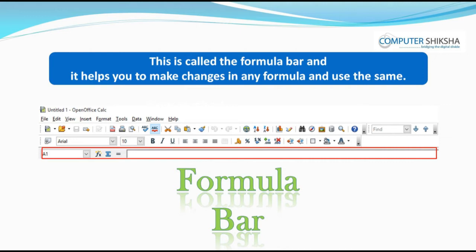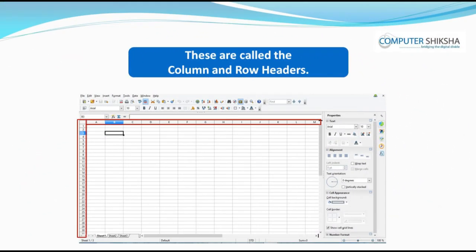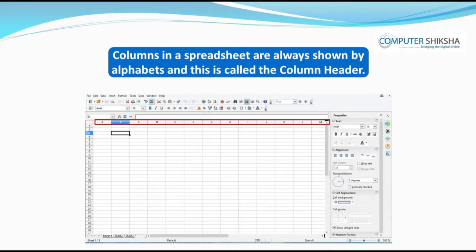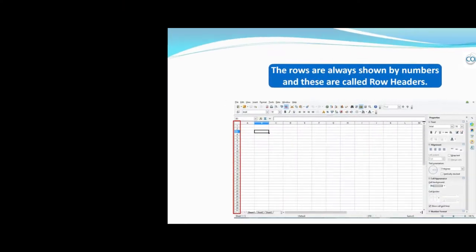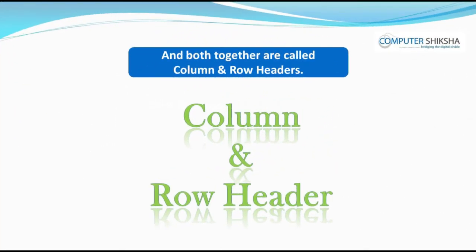That is called the formula bar, and it helps you make changes in any formula and use it. You will learn more about these formulas later. Look at the next picture, which shows two boxes. These are called the column and row headers. Columns in a spreadsheet are always shown by alphabets — this is called the column header. Rows are always shown by numbering and these are called row headers. Both together are called column and row headers.